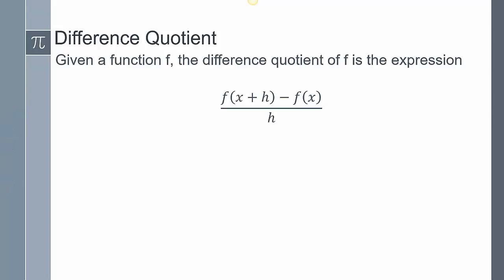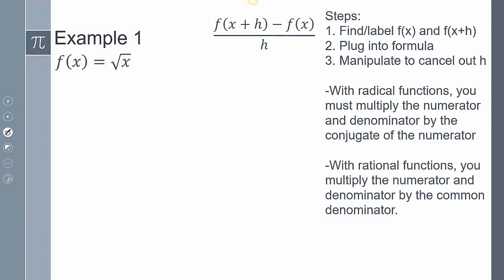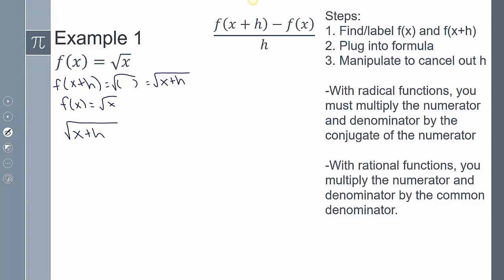Most of the previous steps are going to be the same. The first example is f(x) equals the square root of x. I can find and label my f(x) and f(x+h). So f(x+h) equals the square root of blank, which is just the square root of x+h — so there's an x+h inside my square root. And f(x) is just the square root of x. Plugging everything into the formula, I get f(x+h) minus f(x) all over h.